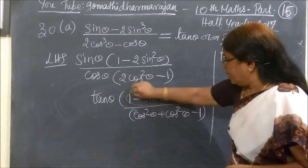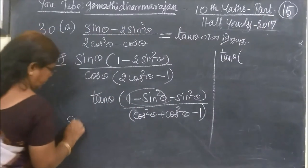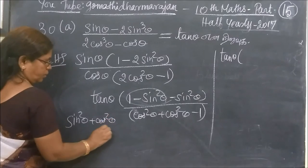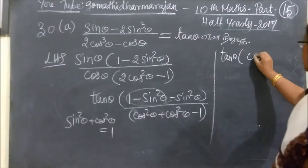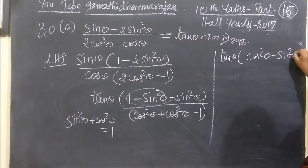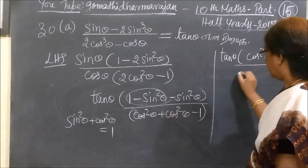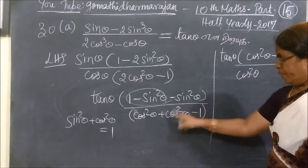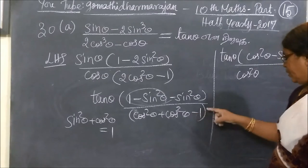So 1 minus sin squared theta gives cos squared theta. We know sin squared theta plus cos squared theta equals 1. So 1 minus cos squared theta equals sin squared theta. You can write cos squared theta equal to 3. If you leave the same, we will have 1 minus cos squared theta.